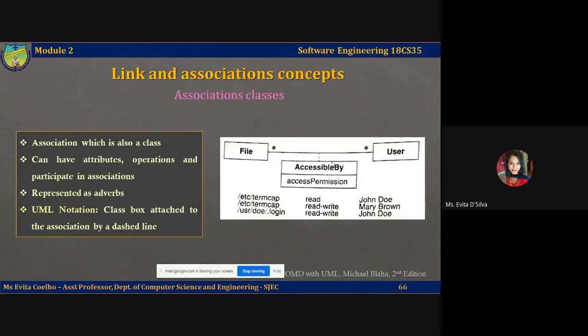Let's move on to the next concept: association classes. Just as you can describe the objects of a class with attributes, you can also describe the links of an association with attributes. UML represents such information with an association class. An association class is an association that is also a class. Like the links of an association, the instances of an association class derive identity from the instances of the constituent classes.